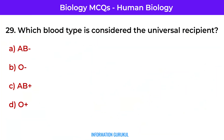Which blood type is considered the universal recipient? AB positive.